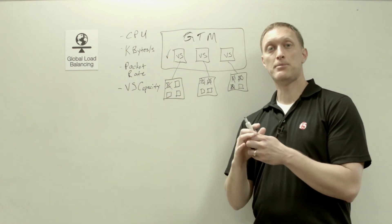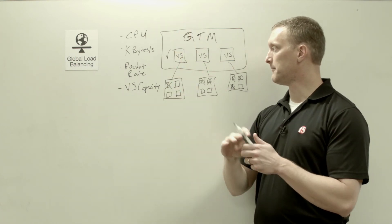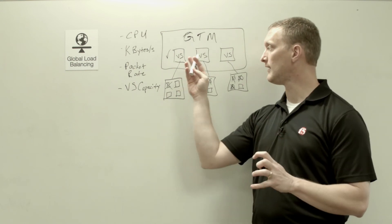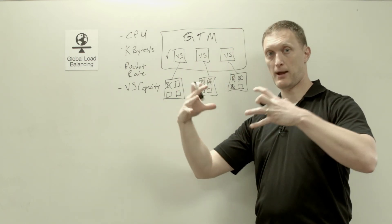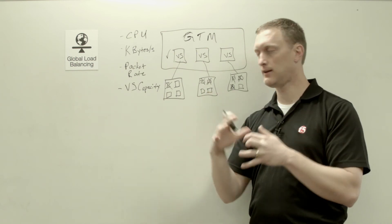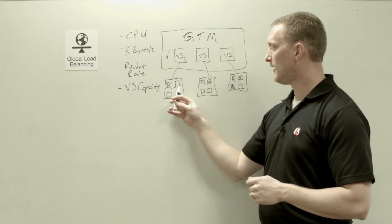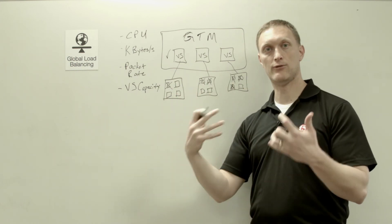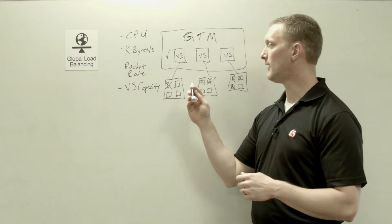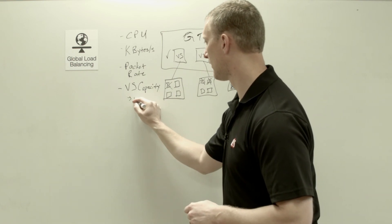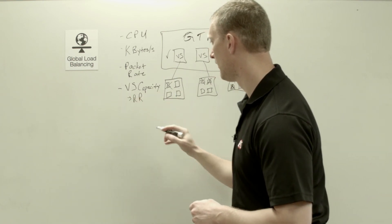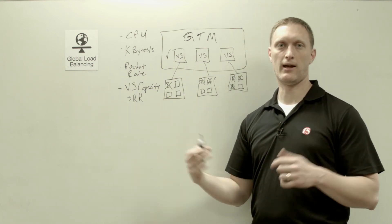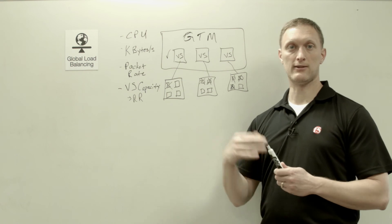And what's going to happen is as requests come in, this guy's going to get chosen. However, I will say this, these two will get chosen as well as capacity numbers fluctuate, come and go. And if in the case that all of these have the exact same amount of virtual server capacity, then you default, and I'll just put a little arrow and I'll just put an R. If they all have the exact same capacity available, then it defaults back to a round robin load balancing mode.